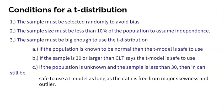If the population is unknown and the sample size is less than 30, then it can still be safe to use a t-model as long as you check your data and you make sure that it's free of major skewness and any major outliers. If that's true, then you're still fine to use the t-model.